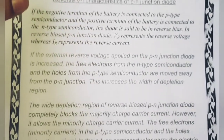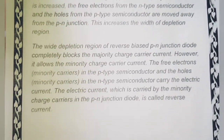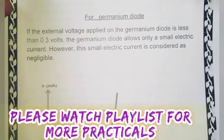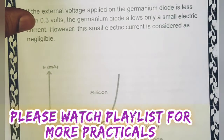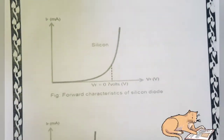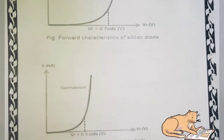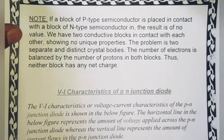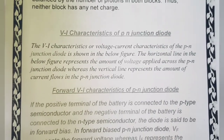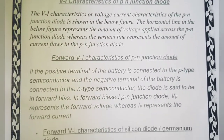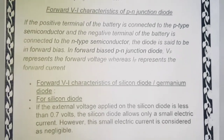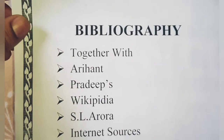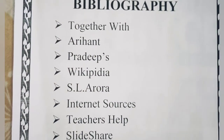PN junction diode reverse bias के बारे में दिखाया है। Next हमारे पास Germanium diode की कुछ presentation है picture से। उसके बाद forward V-I characteristics of junction diode देख सकते हैं। At the end bibliography है — जहाँ sources mention हैं जिनसे यह investigatory project बनाया गया है।